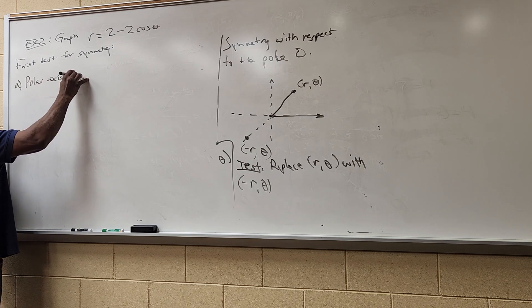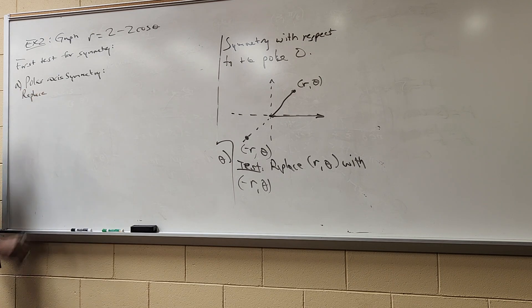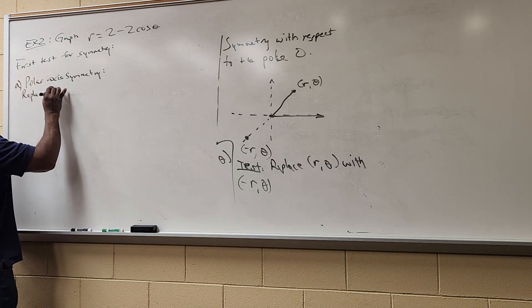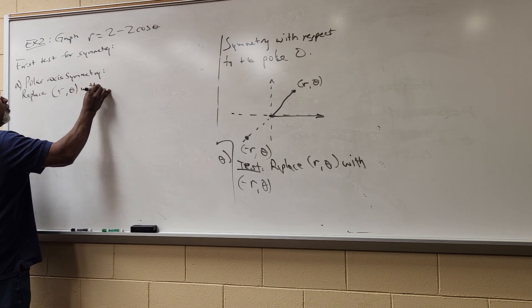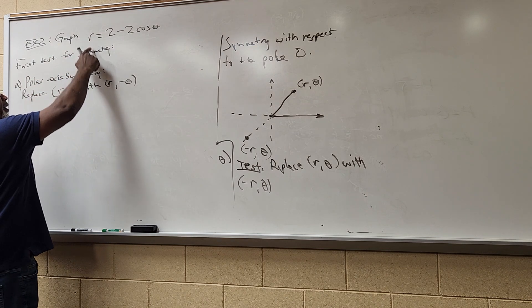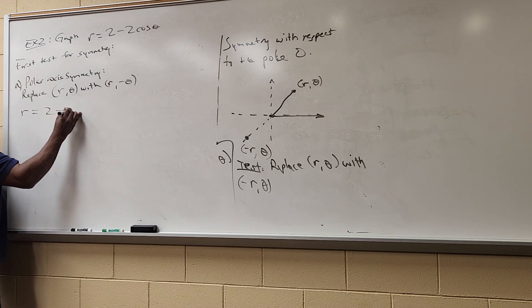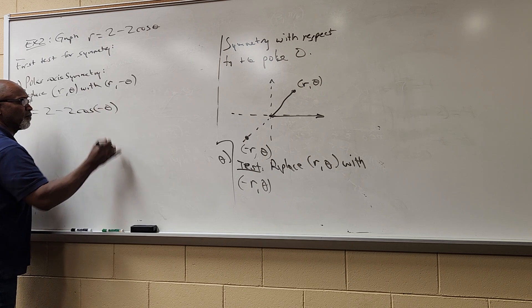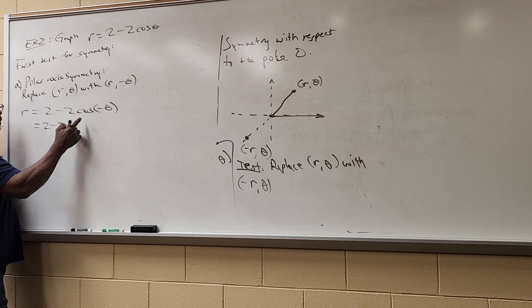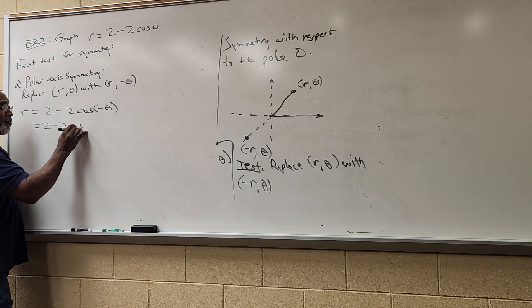For polar axis symmetry, we replace (r, θ) with (r, -θ). So in the equation, I leave r as is, and where I had θ I put -θ. So r = 2 - 2cos(-θ). Where I had θ, I put -θ.